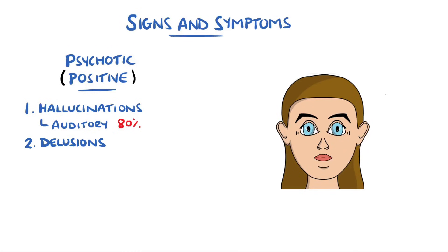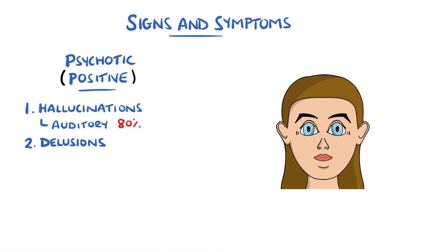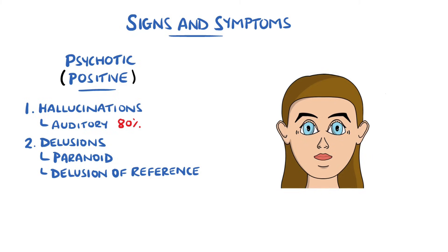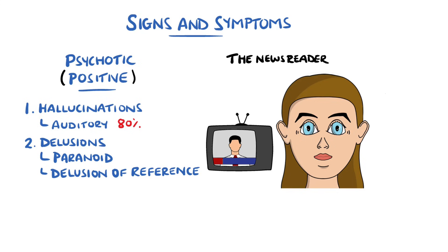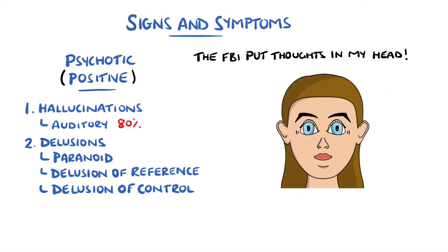Delusions are a fixed belief that something is true despite having evidence that it is not. In schizophrenia, paranoid delusions are common — for example, believing the FBI is following them or that they are being poisoned. Delusions of reference are also common, where a person believes messages are meant specifically for them, such as believing a newsreader on TV is talking directly to them. There can also be delusions of control, where a person believes that someone else is controlling their thoughts, such as the FBI placing thoughts in their minds.